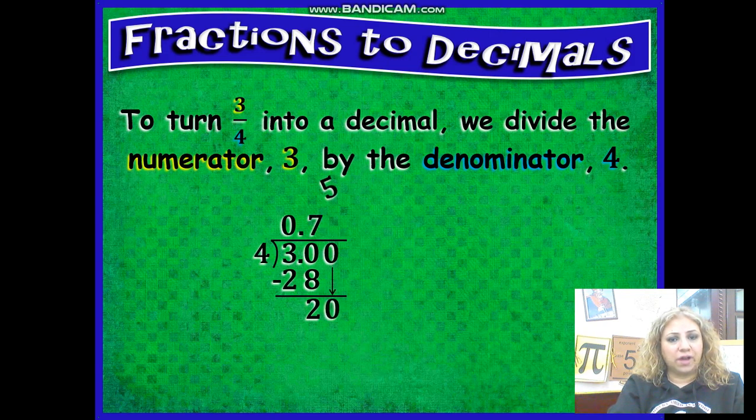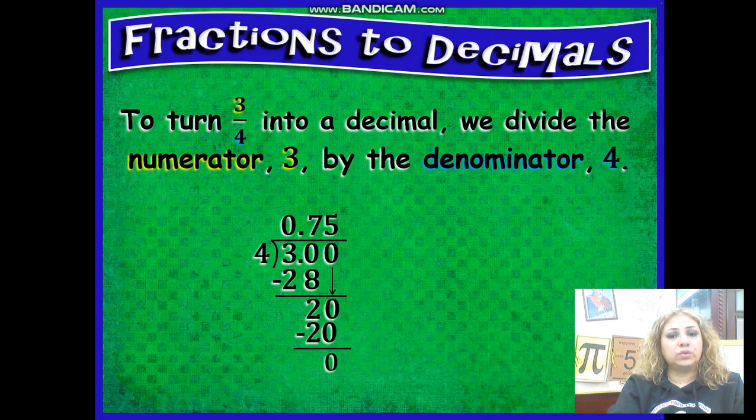And attach a zero and divide again until you have no remainder. Twenty divided by four is five. So three fourths is equal to 75 hundredths. This is how I changed fractions to decimals.